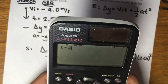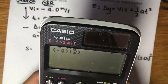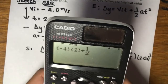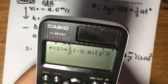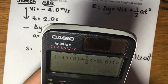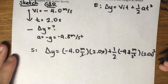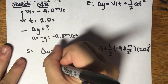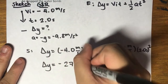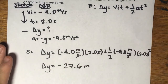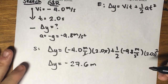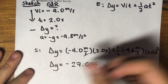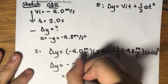Now let's solve. That's going to be negative 4 times 2, plus one-half times negative 9.8 times 2 squared. This will be equal to negative 27.6. So delta y is equal to negative 27.6 meters. Now let's check for significant figures — we have two sig figs throughout, so our final answer should also reflect that. That gives us 28 meters.